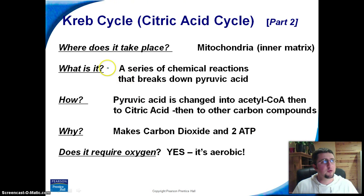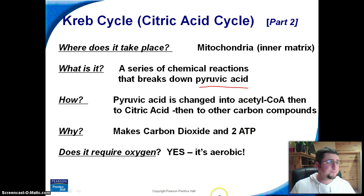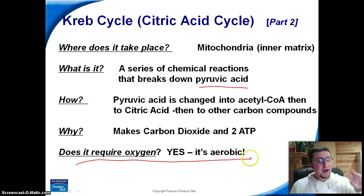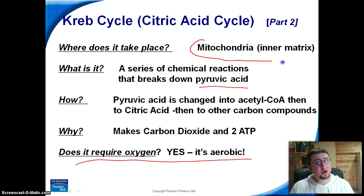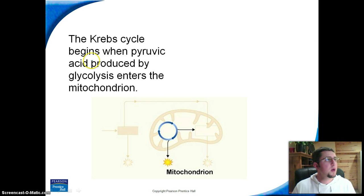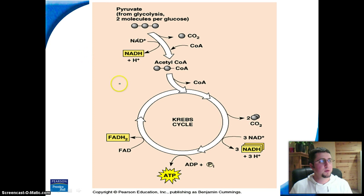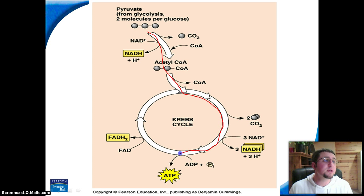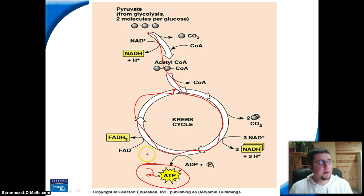Our next step in cellular respiration is called the Krebs cycle. The Krebs cycle is a series of chemical reactions that break down pyruvic acid after it has come from glycolysis. One really important thing to know about the Krebs cycle is that it needs oxygen to occur — this is why we breathe oxygen. The Krebs cycle occurs inside the innermost part of the mitochondria. Here's a diagram representing a whole slew of reactions, but just know that we are going to use some pyruvic acid, it's going to go through a cycle, and we're going to get two ATP as a net end product.